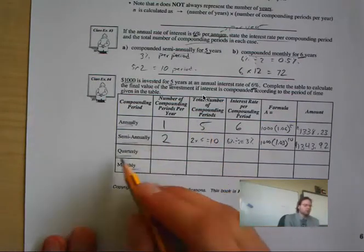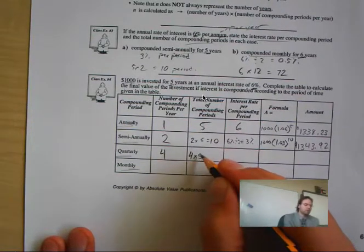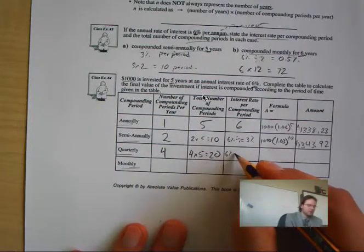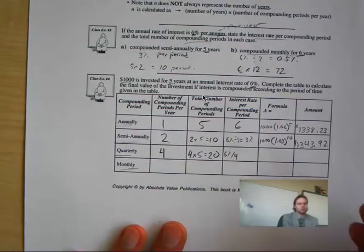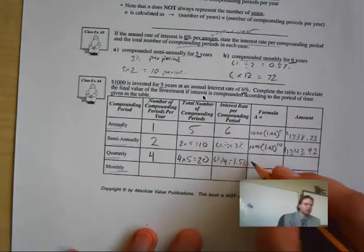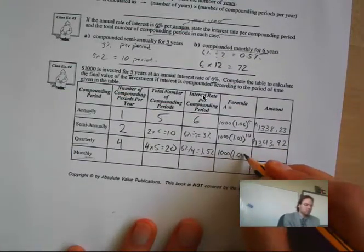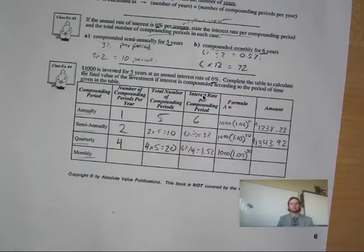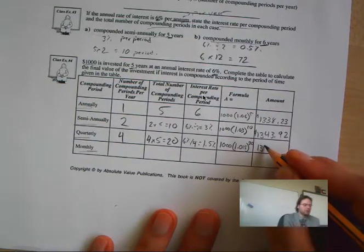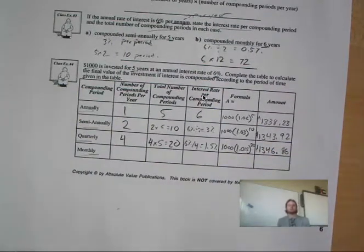Let us try quarterly — that is four times per year. So four times five years equals twenty compounding periods. Six percent divided by four gives 1.5% per period. So we have $1,000 multiplied by 1.015 to the power of twenty. That gives me $1,346.86. Look how interesting this is turning out.